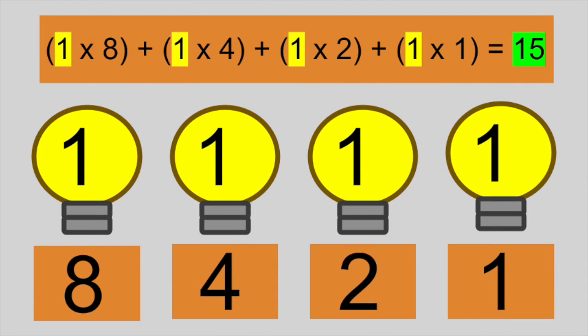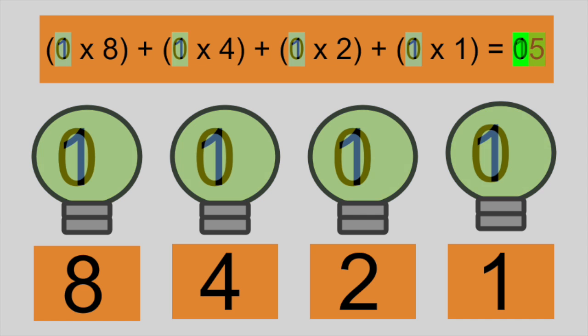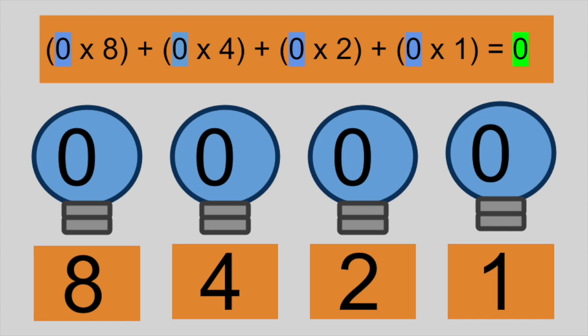When all four light bulbs are on, we can add up their values to get the number 15, since 8 plus 4 plus 2 plus 1 is 15. When a bulb is on, we can imagine that we are multiplying the power of 2 by 1. When the light bulb is off, we multiply that power of 2 by 0. So if all of the light bulbs are turned off, we get 0 times 8 plus 0 times 4 plus 0 times 2 plus 0 times 1.